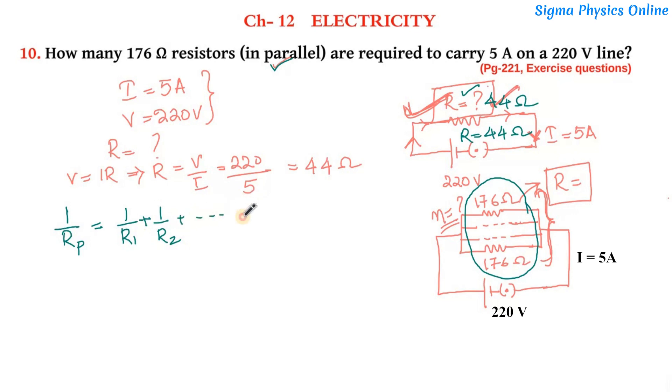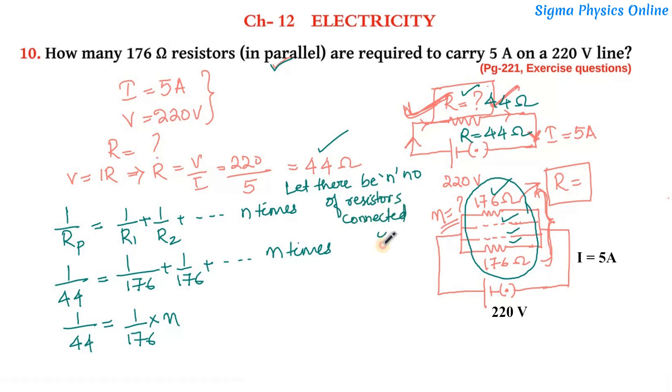Now the value of the resistance which we got here is 44 ohms. So 1 by 44 equals 1 by 176 plus 176 plus 176, n times. So 1 by 44 equals 1 by 176 times n, because there are n number of resistors. So we need to write down here: first, let there be n number of resistors connected in parallel.